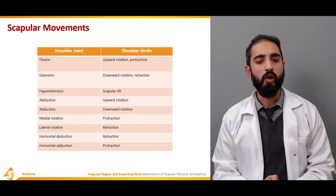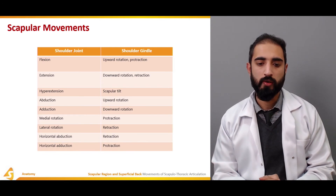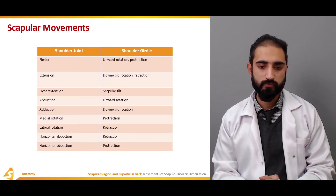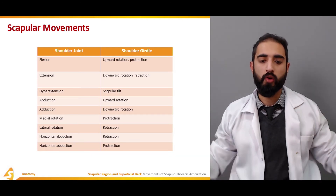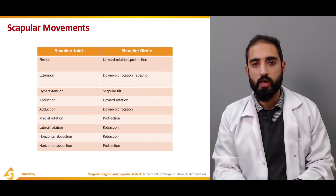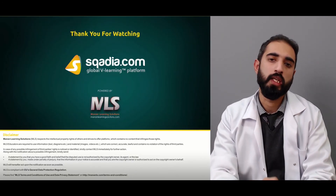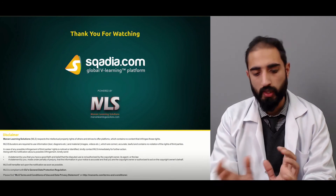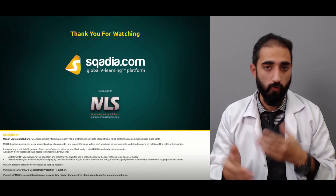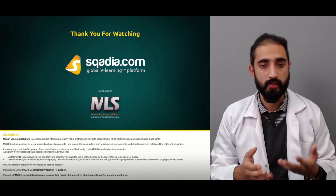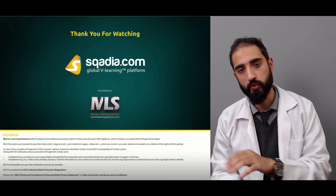Additionally, in horizontal abduction, there is retraction of the scapula — as you are moving the arms outward — and in horizontal adduction, there is protraction of the scapula. This covers the association between scapulothoracic and glenohumeral articulation, and which movements at the glenohumeral joint are accompanied by which movements at the scapulothoracic articulation.